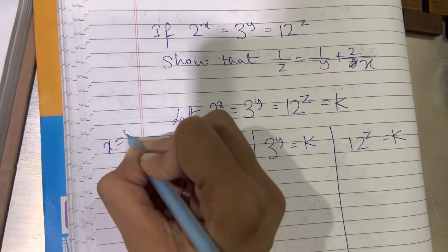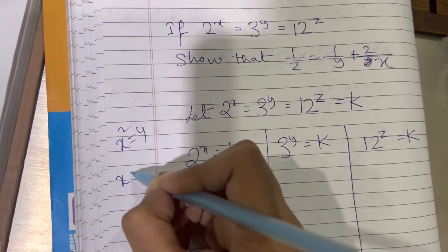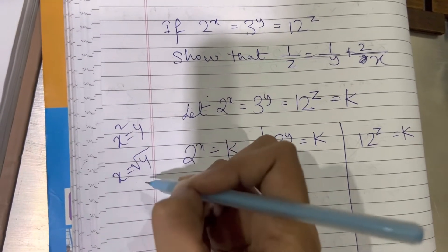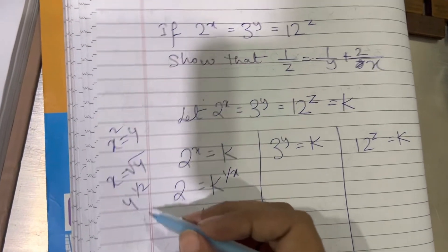Just for example, let's say x square is equal to 4. Then x will be equal to what? We usually write square root of 4. What is square root of 4? Basically it's 4 to the power 1 by 2.